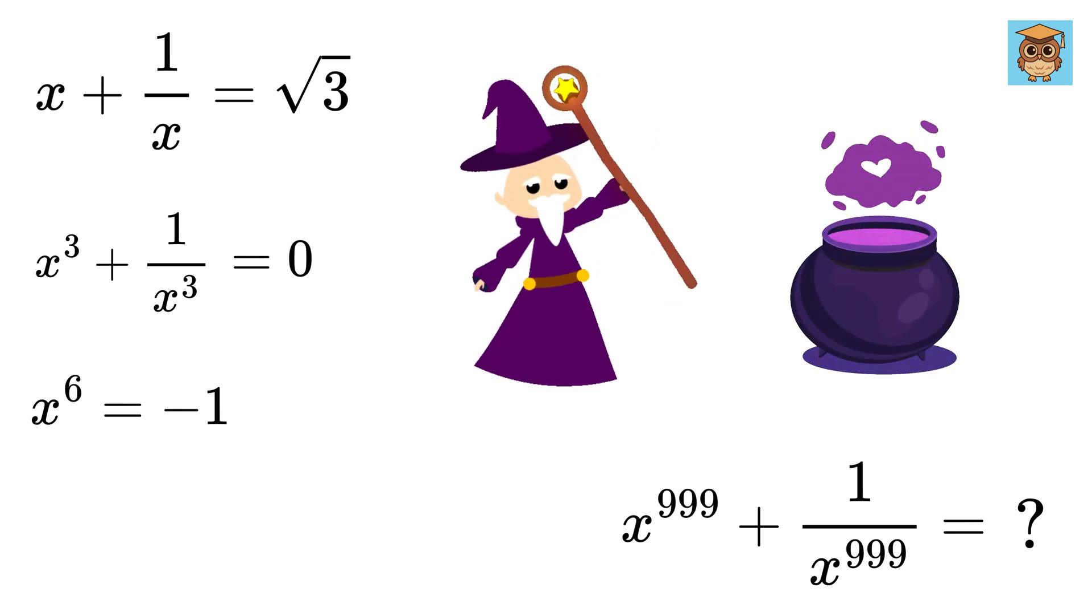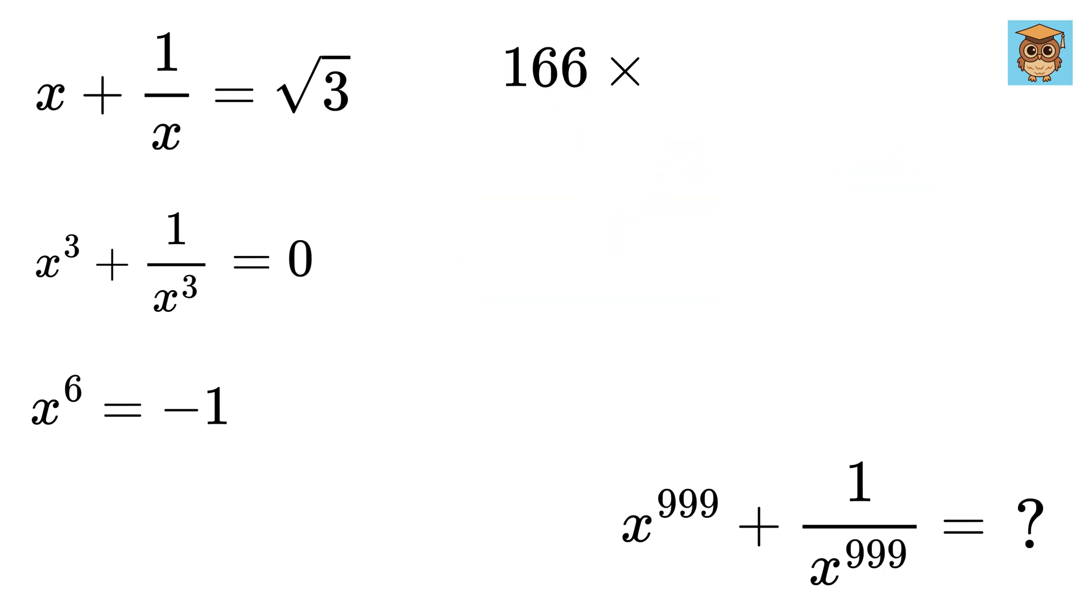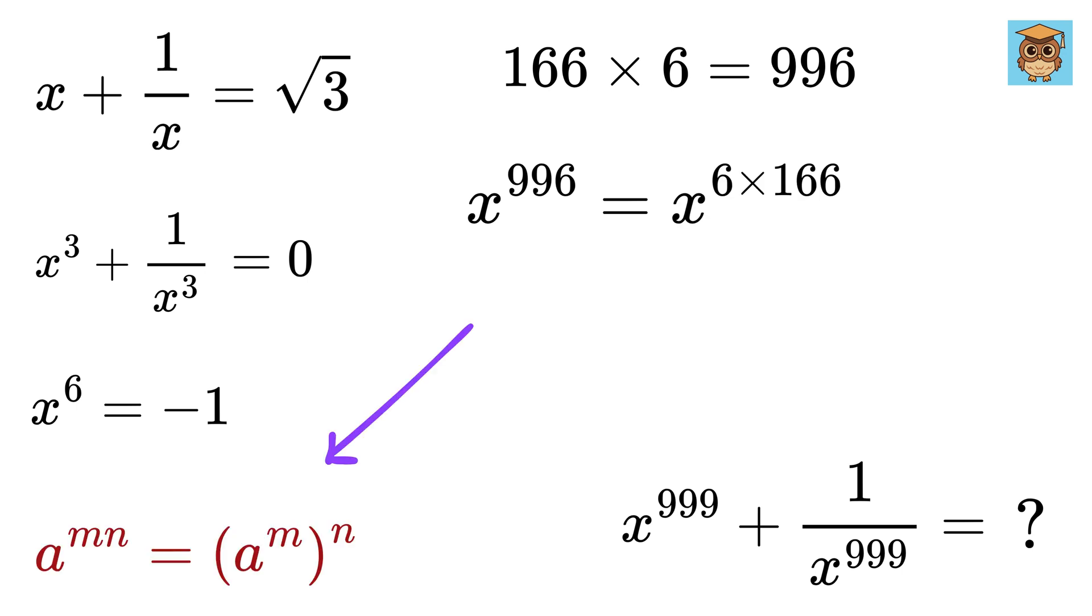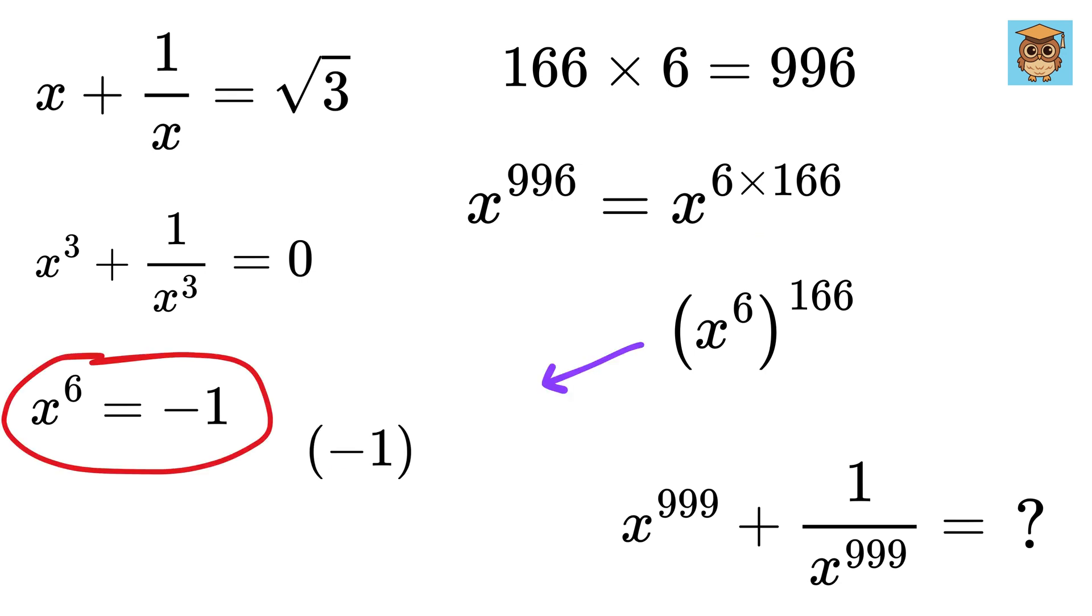Now, here comes the magic. If we multiply 166 with 6, we get 996. So x to the 996 can be written as x raised to 166 times 6, and using this power rule, it can be written as x to the 6 raised to 166. This will become minus 1 raised to the power of 166.